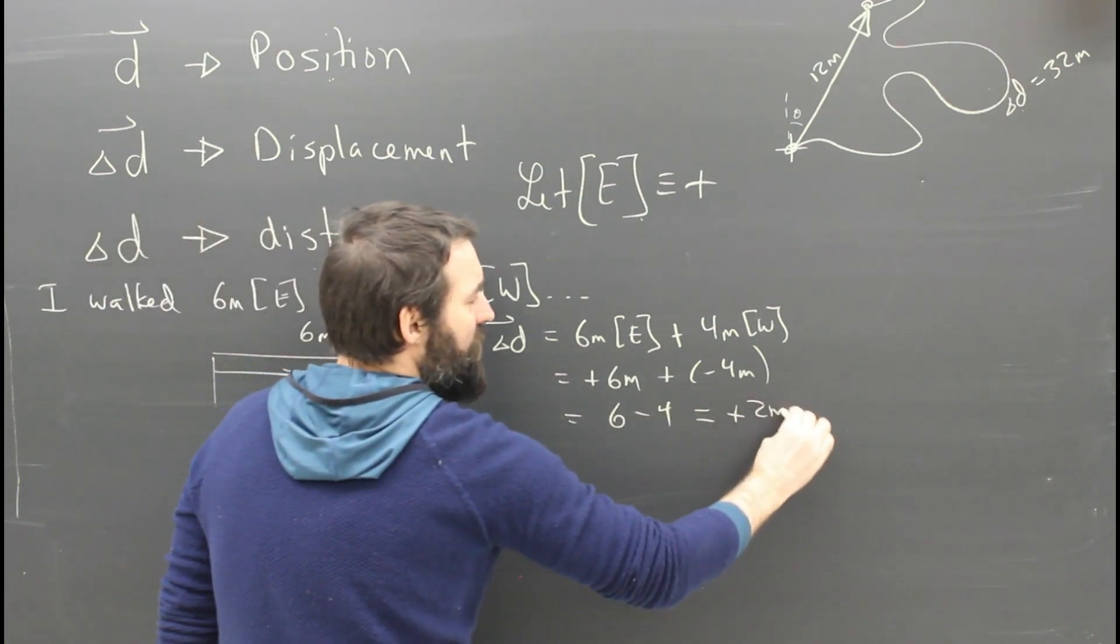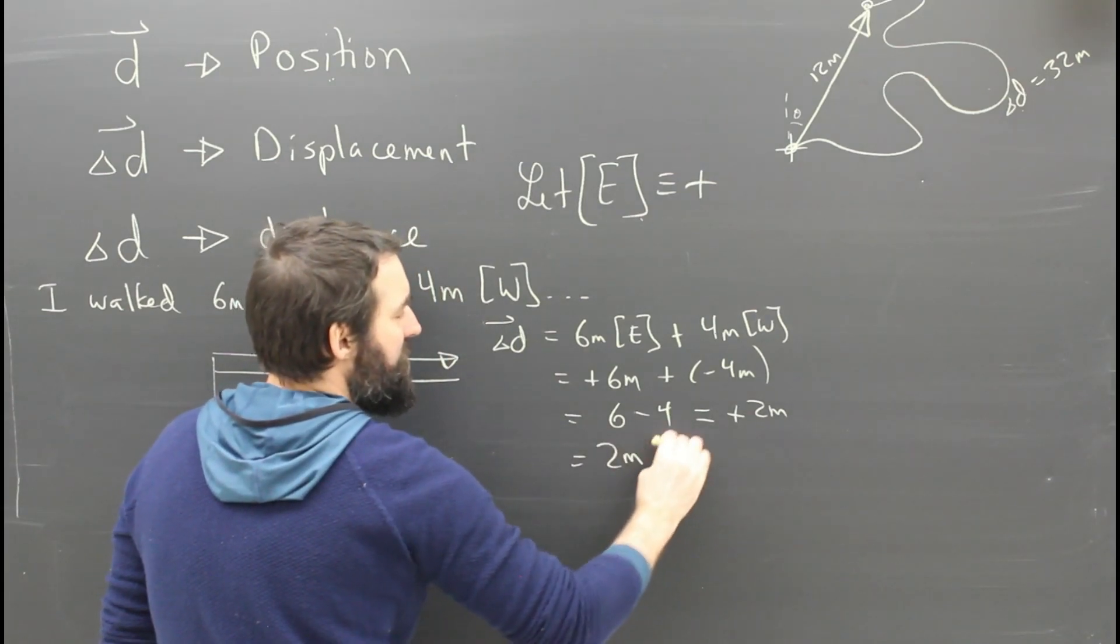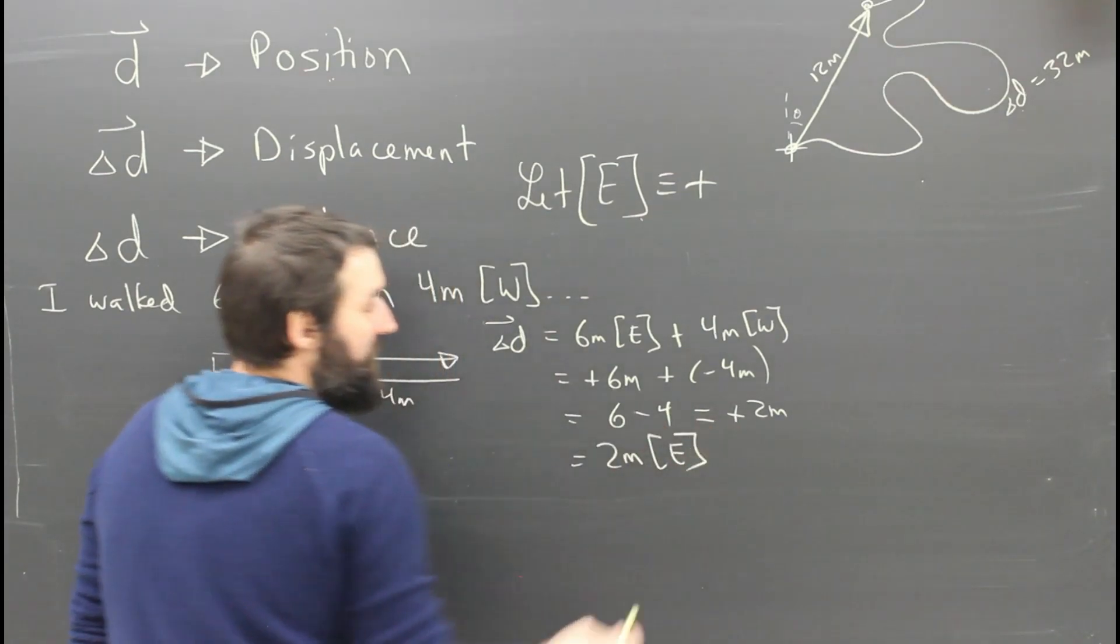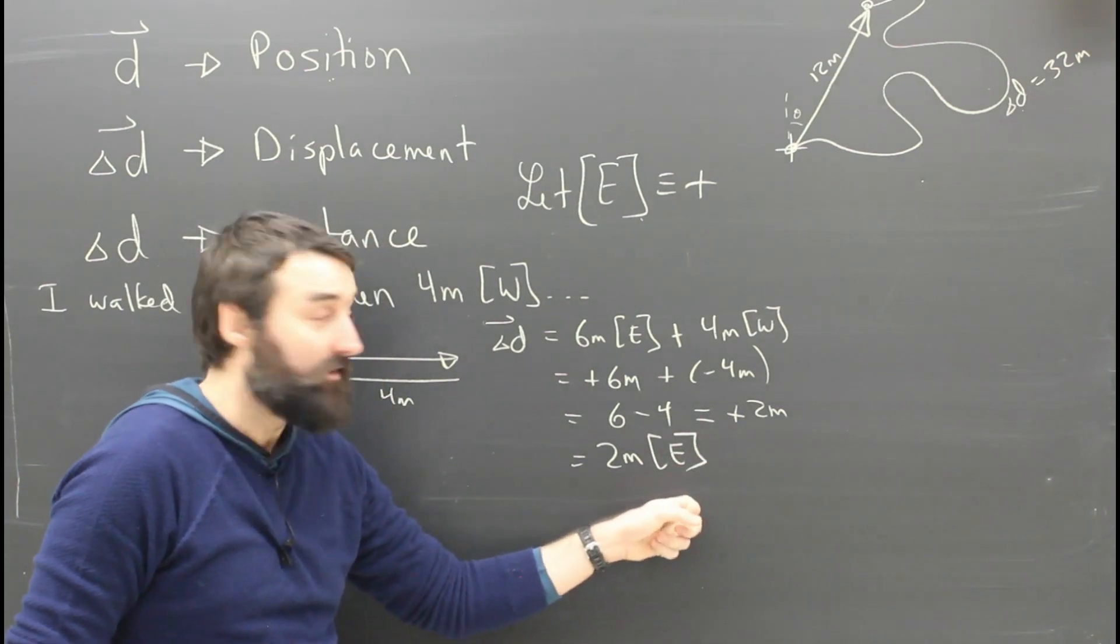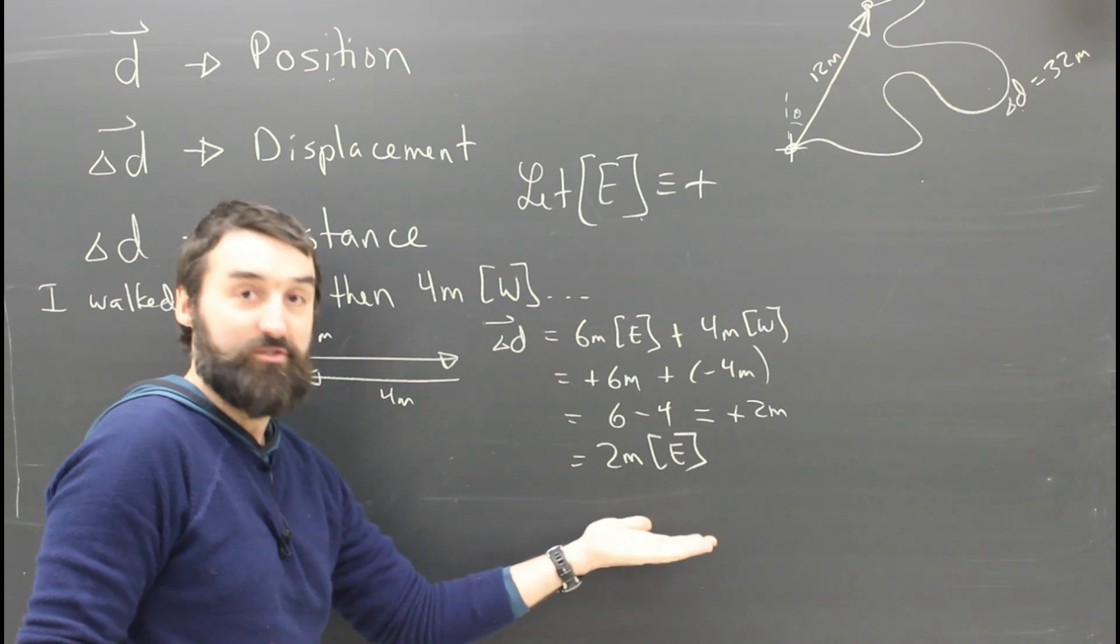The answer is positive two, which of course means two meters east. Try to get in the habit of not putting pluses and minuses along with the letters. Plus two meters, which is two meters east.